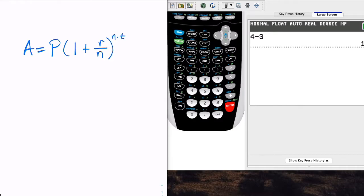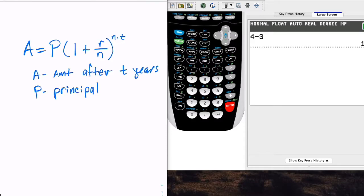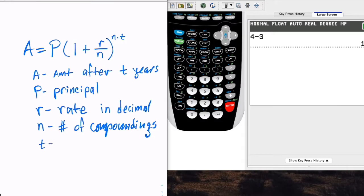Now the things are is that A is the amount after T years, P, principal, that's the initial investment, R is the rate, and I'm going to emphasize that it's in decimal, that N is the number of compoundings in a year, and T is number of years. That's our formula that we're going to be using.